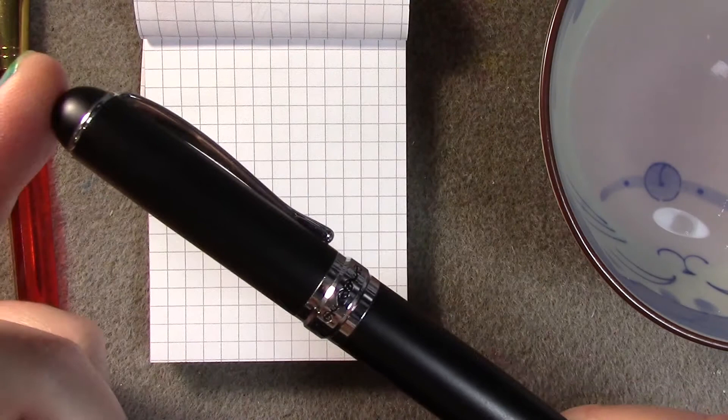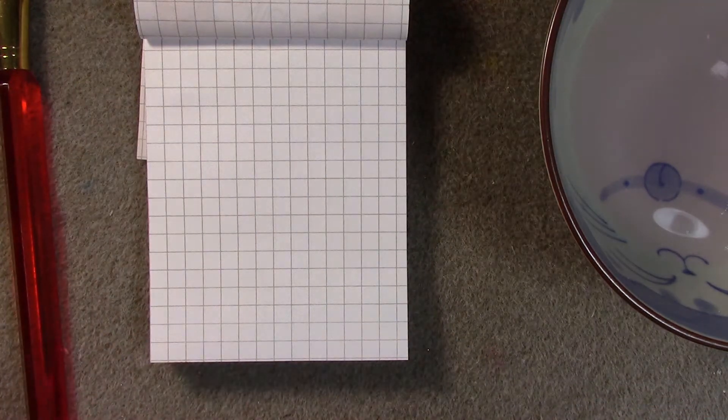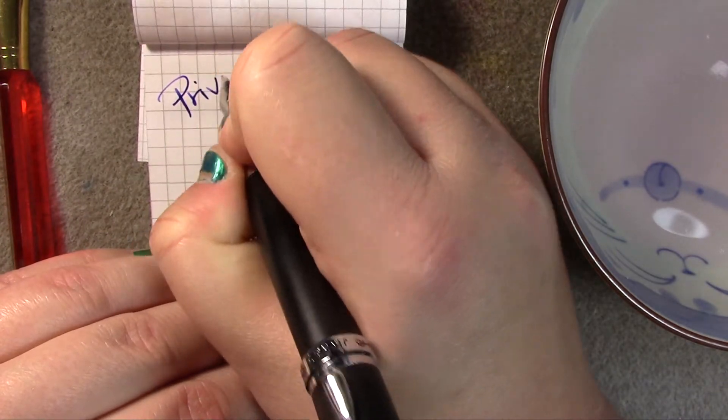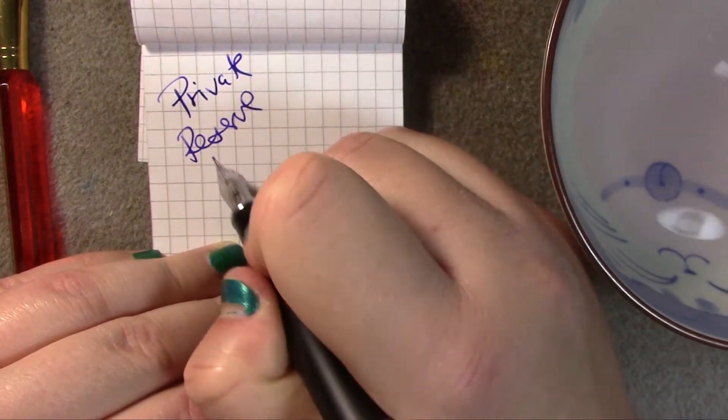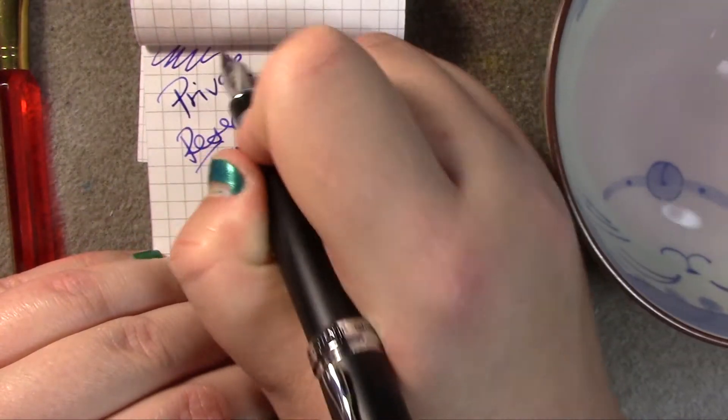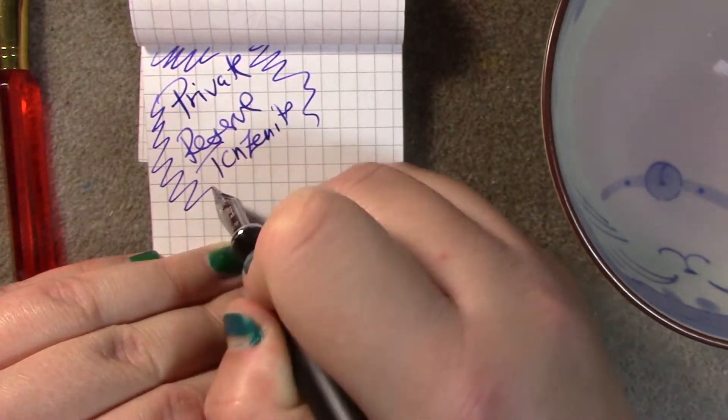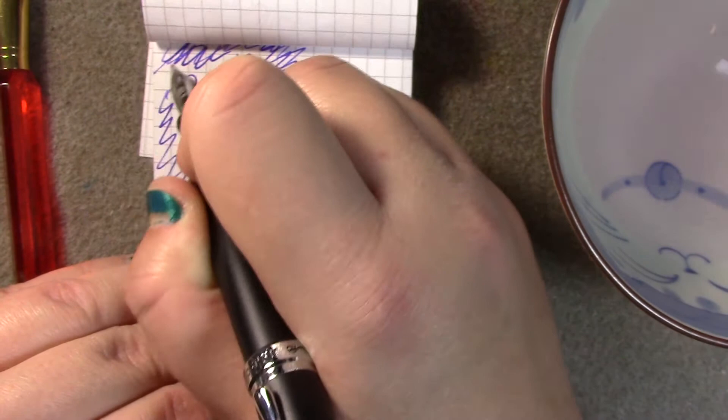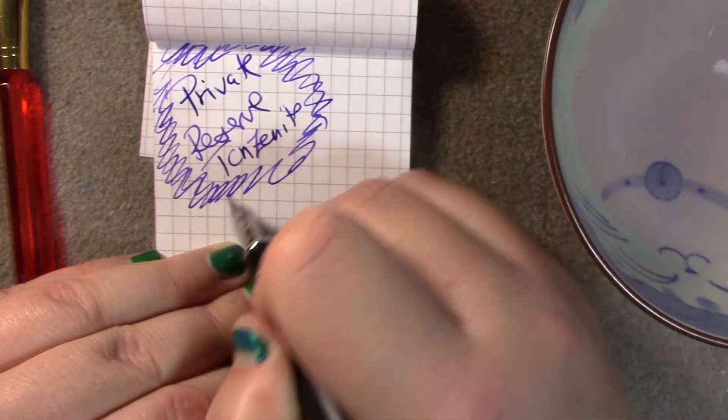In my Jinhao X750, I have Private Reserve's Tanzanite. It's a much more purpley shade compared to Pelican Edelstein's Tanzanite, which has more of a bluey tone. I can show you a sample of that.